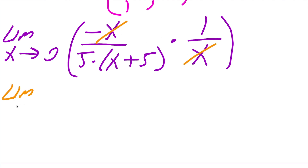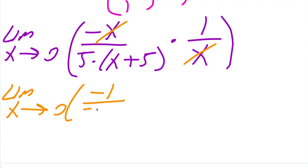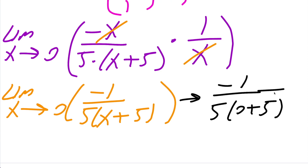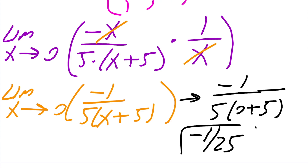We get the limit as x approaches zero of negative one divided by five times x plus five. Now we plug in x equals zero: negative one divided by five times zero plus five, which is negative one divided by five times five, equals negative one divided by 25. That's our final answer — we can box it in.